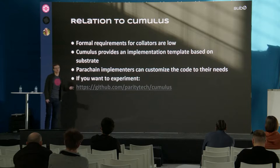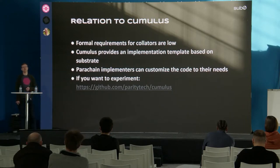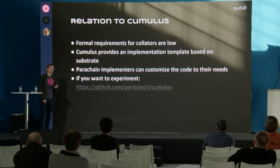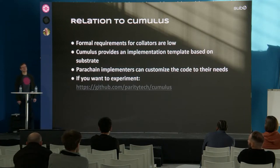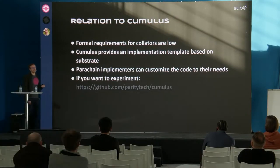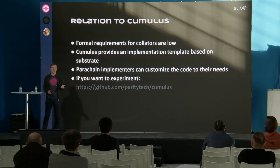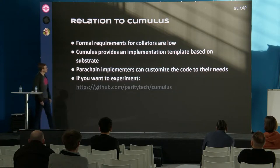How is this related to Cumulus? The formal requirements to be a collator are fairly low — as long as you can provide some block candidate or collation, you can be a collator. You could even assemble a shell script that does this. But in most cases you want to build a collator that is based on Substrate, and in that case we provide basically a template that has all the required logic to be a parachain collator. You can take this template, modify it to your needs, and you have a nice starting point. You can go to the Cumulus project on GitHub, fork it or clone it, build it, and play around.